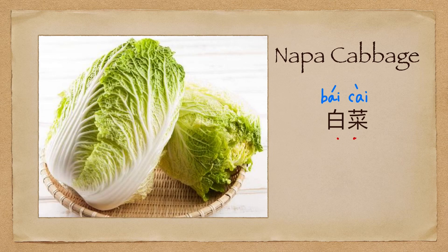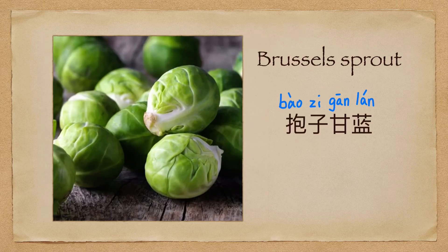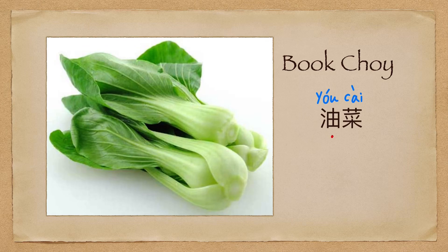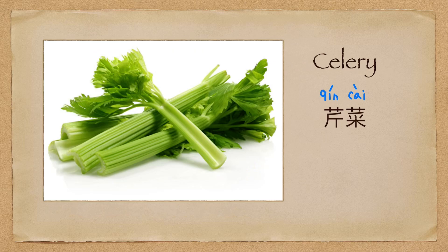白菜 (napa cabbage). 豹子甘蓝 (kohlrabi). 菠菜 (spinach). 油菜 (rapeseed greens). 芹菜 (celery).